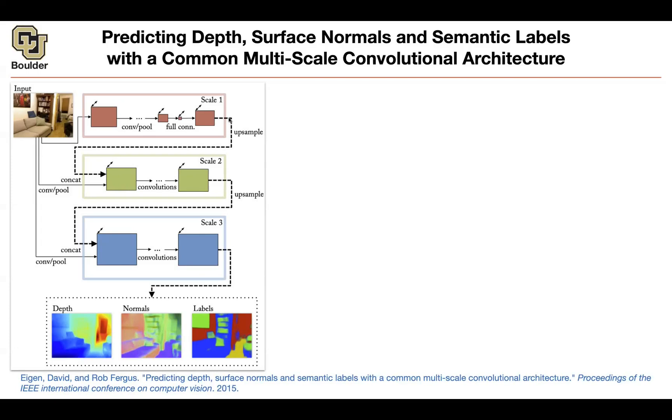You're just going to take the output of the first stage, concatenate it with the input to the second stage or the second scale. But this one is going to have an output in terms of depth, normals, and labels.